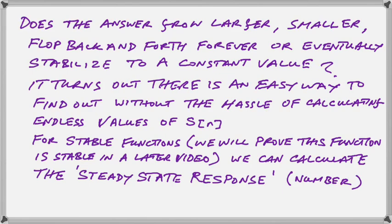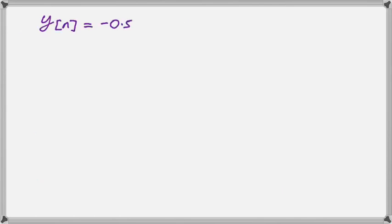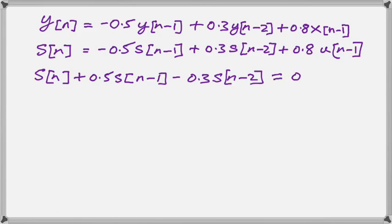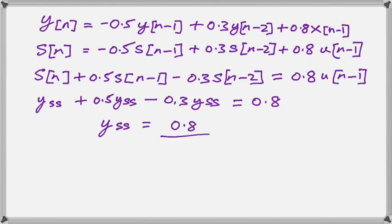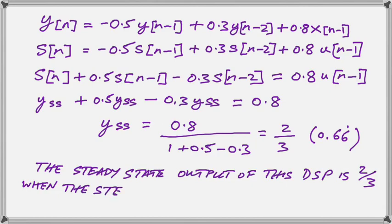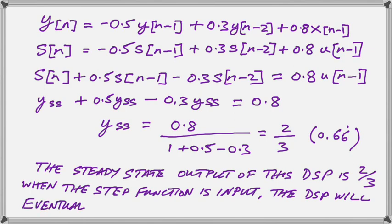We can calculate the steady state response in a simple manner from the difference equation again or from the step response equation because there's quite a great deal of similarity. It has to be arranged in the same form where we have all the S[n] values on the left and all the U values on the right. Now, the U value is just a constant because U[n] is going to be a 1 once we are greater than 0.